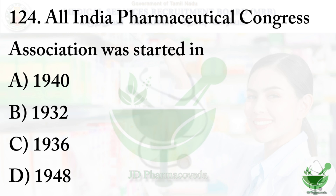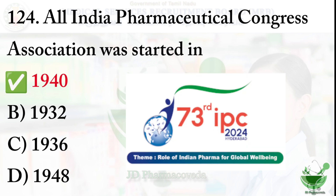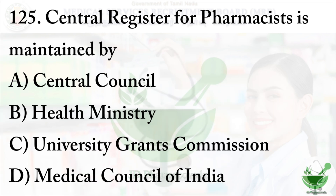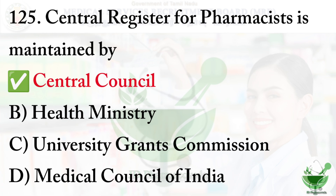Question 124: All India Pharmaceutical Congress Association was started in — Option A: 1940, option B: 1932, option C: 1936, option D: 1948. The right option is option A, 1940. Question 125: Central register for pharmacists is maintained by — Option A: Central Council, option B: Health Ministry, option C: University Grants Commission, option D: Medical Council of India. The right option is option A, Central Council.